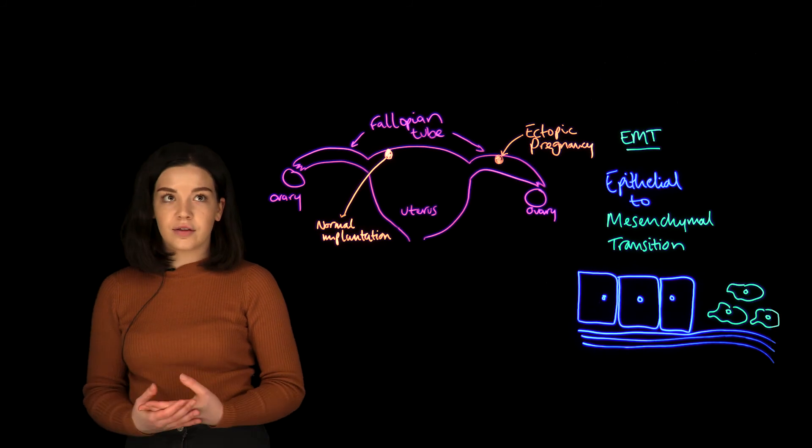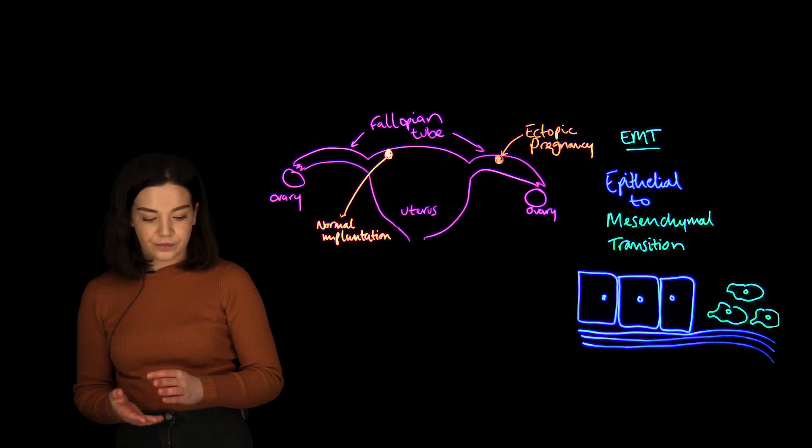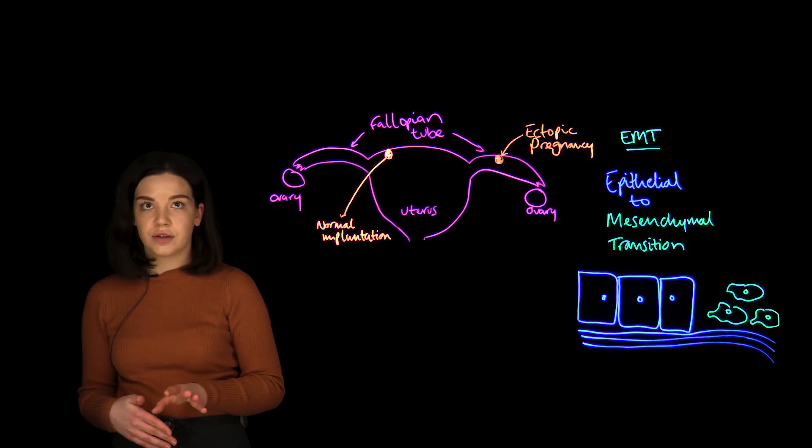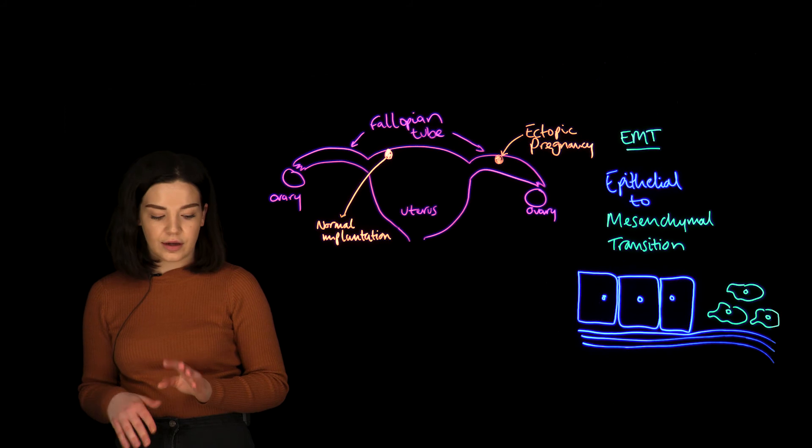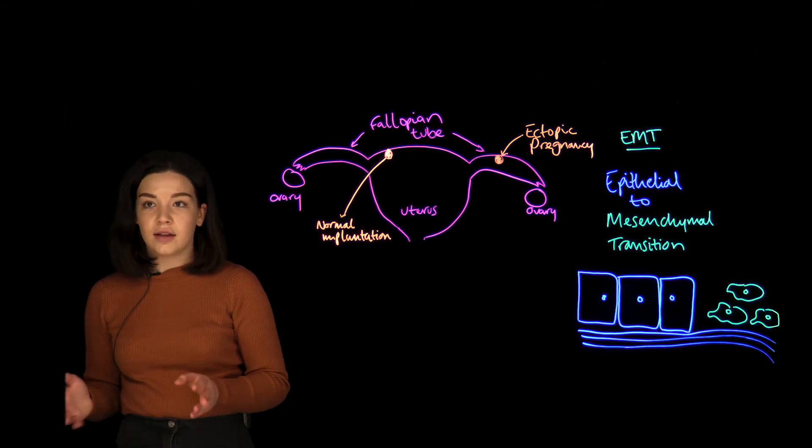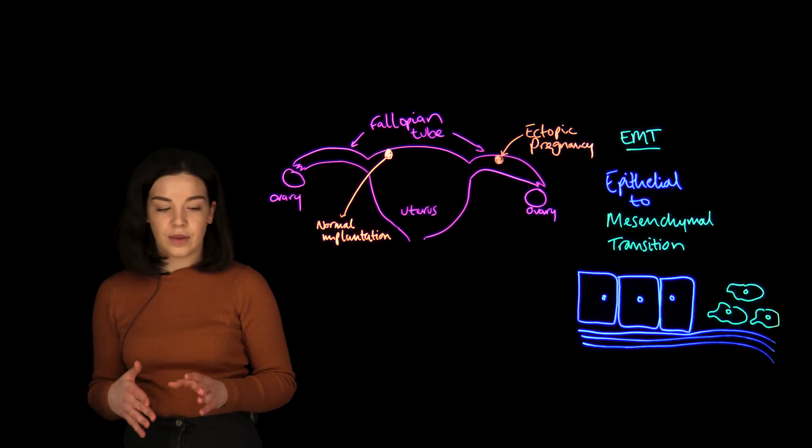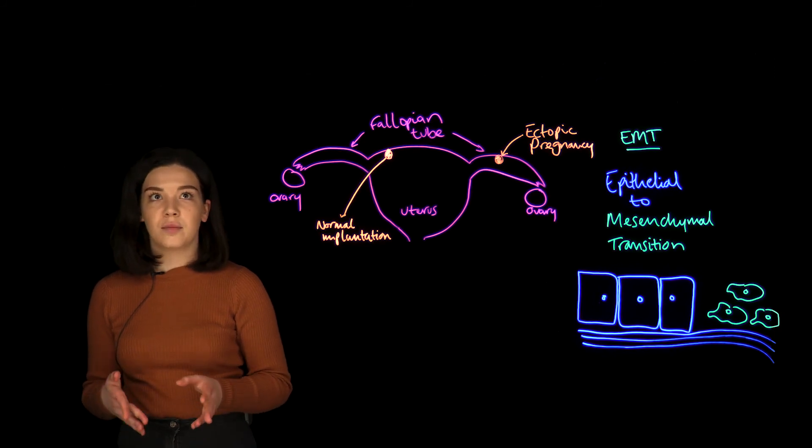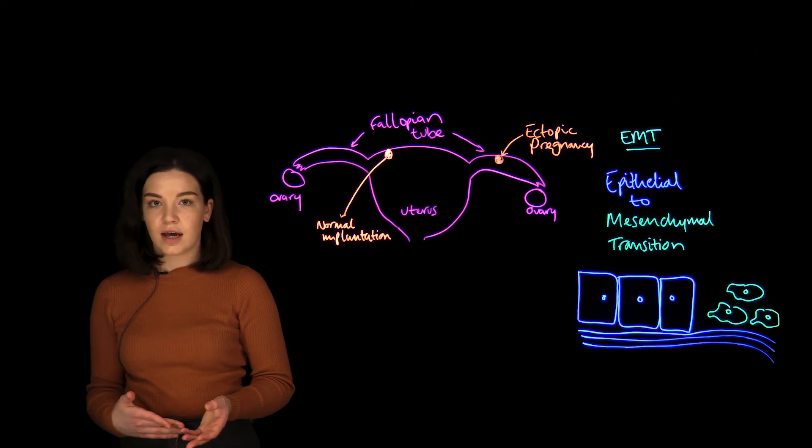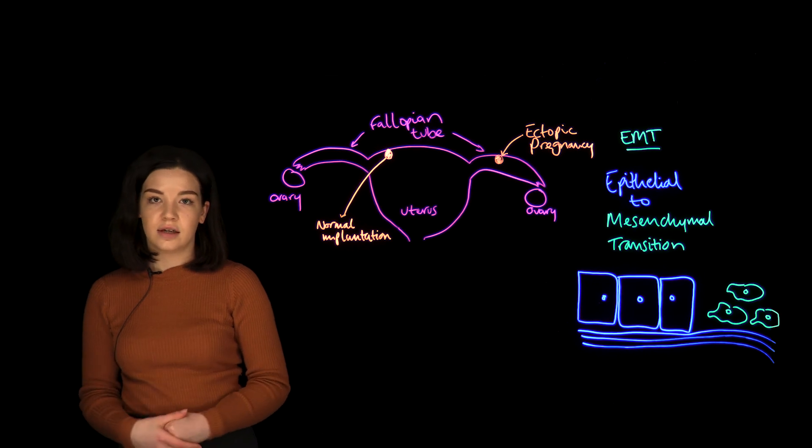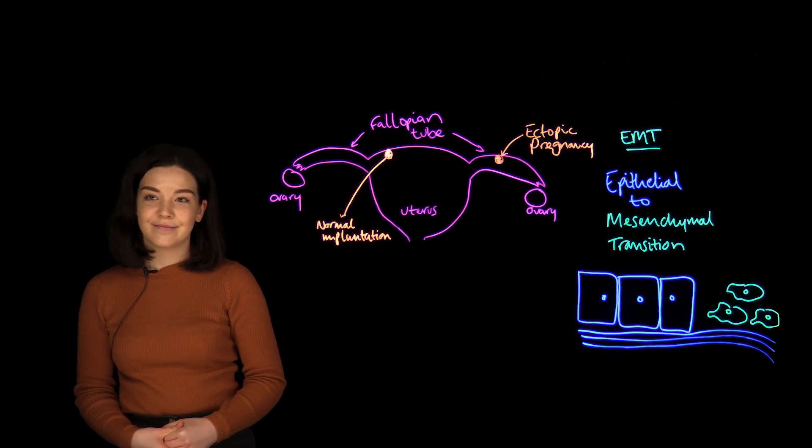Our theory is that EMT occurs in the fallopian tube leading to ectopic implantation, and this will lead to a lot of exciting research. This is important because if we understand why ectopic pregnancies happen, then this will help to reduce their frequency in the future.